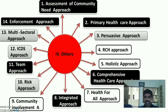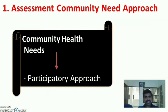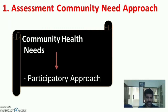The full list of other approaches includes: assessment of community need, primary health care, persuasive, RCH, holistic, comprehensive health care, health for all, integrated, community involvement or participation, risk, team, ICDS, multi-sectoral, and enforcement approach. For the assessment of community need approach, we first identify community needs through a participatory approach — involving community members to identify their important problems — then apply the nursing process to solve them.